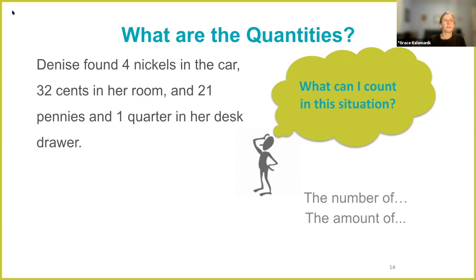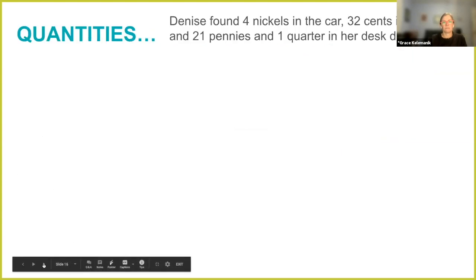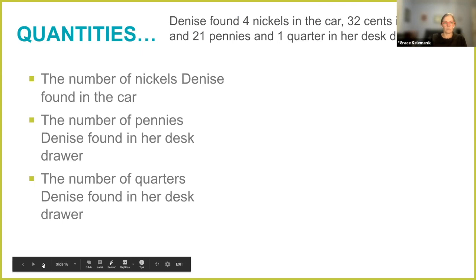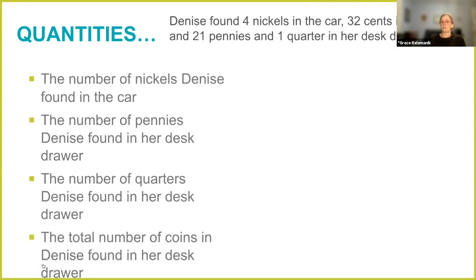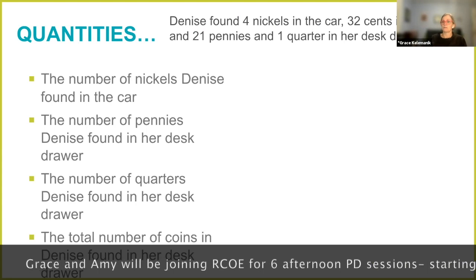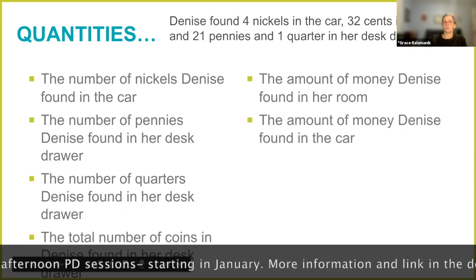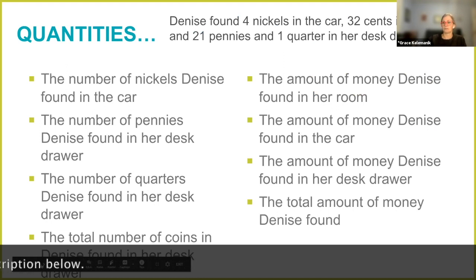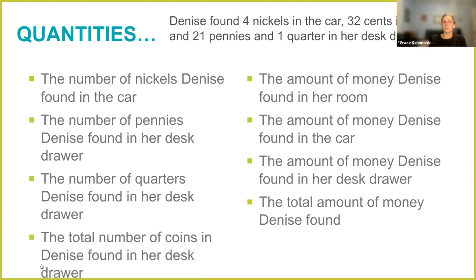Folks are starting to put quantities in the chat — number of nickels, number of pennies — there's a whole bunch of quantities here. You've named the number of nickels Denise found in her car, the number of pennies she found in her desk, the number of quarters in her desk drawer, the total number of coins she found in her desk drawer. Some quantities are explicitly stated and some are implied: the amount of money she found in her room, in her car, in her desk drawer, the total amount of money she found. We're talking about nickels and pennies, but sometimes those numbers are the number of coins we have, and sometimes those numbers are the values or the amounts of those coins.